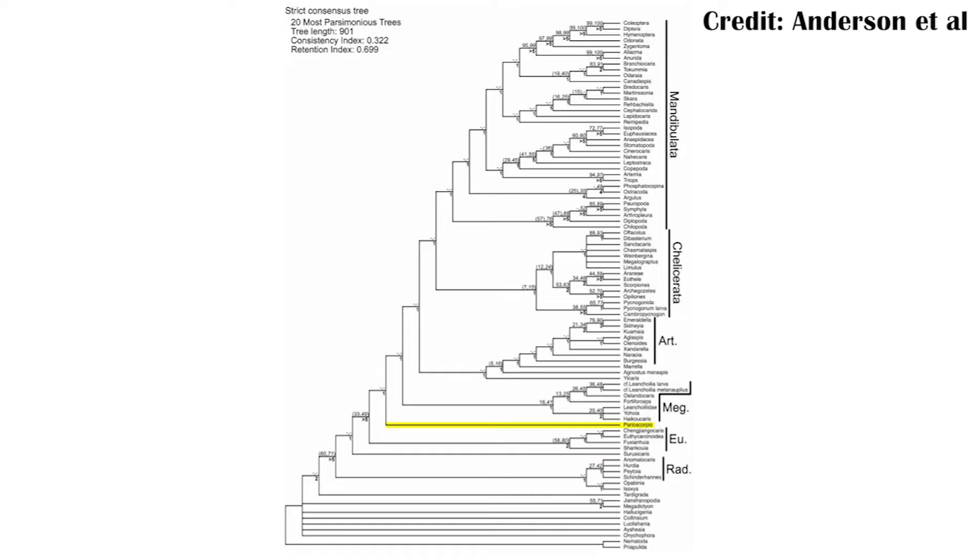Closer to Parioscorpio and the arthropods are the radiodonts, megacheirans, and then way up high are the chelicerates, which does include the scorpions. All the arthropod groups are named with little bars on the side, and some of these are a little weird — like calling Opabinia not an arthropod but all the radiodonts as arthropods, despite them both coming to the same node at the base of the tree. But that's okay, because that's not the focus of this study, and there are other papers that have looked more closely at those relationships. This is just for a broader understanding of where Parioscorpio may fit in a larger arthropod clade.